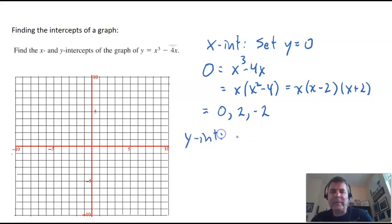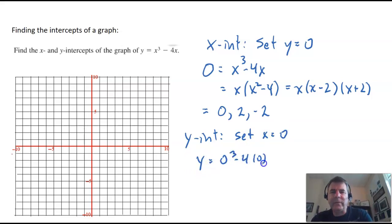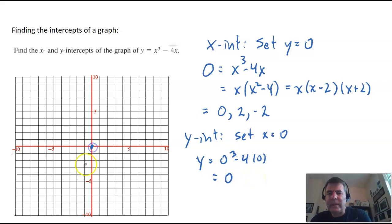To get the y intercept, you set x equal to 0. So we get y equals 0 cubed minus 4 times 0, which is obviously 0. So we have a point at (0, 0), a point at (2, 0), and a point at (negative 2, 0). Now I'm interested in what's happening between the x intercepts, so let's do an xy chart.